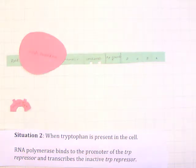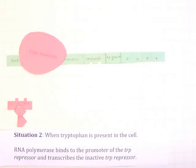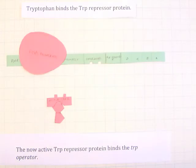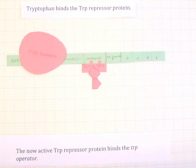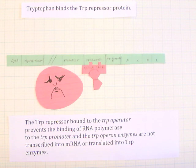However, in this situation, tryptophan, since it's present in the cell, will bind the trp repressor protein. The now active trp repressor protein will bind the trp operator. The trp repressor bound to the tryptophan operator prevents the binding of RNA polymerase to the trp promoter, and the trp operon enzymes are not transcribed into mRNA nor are they translated into trp enzymes.